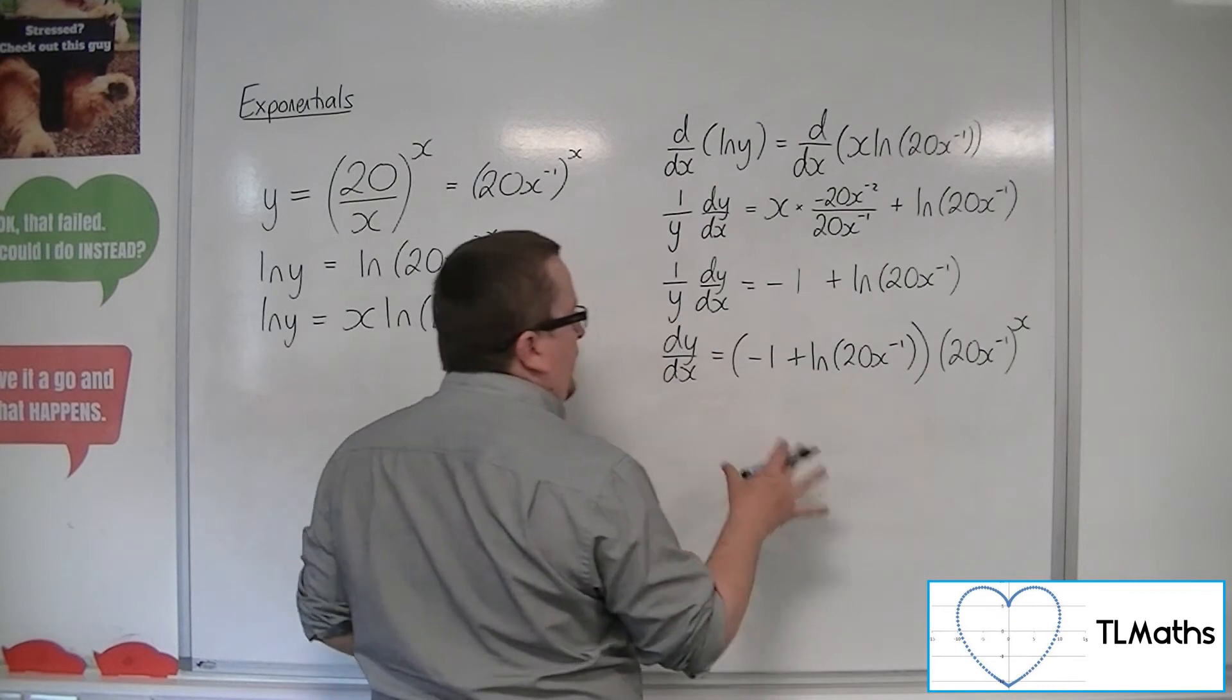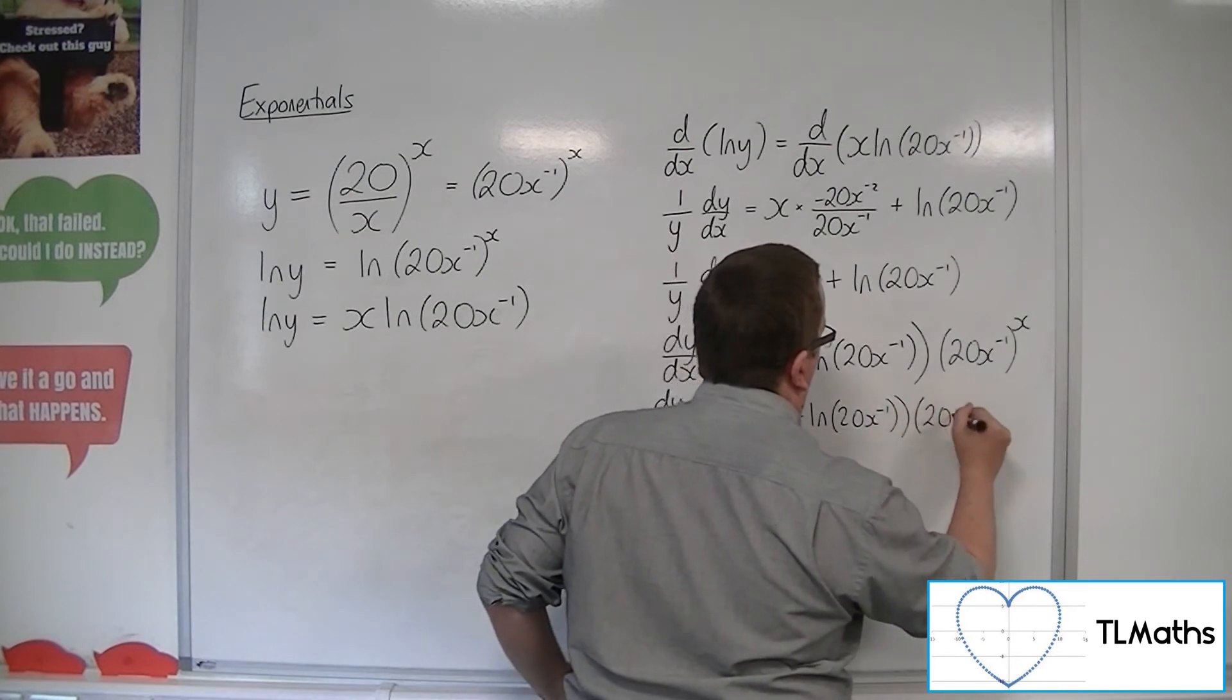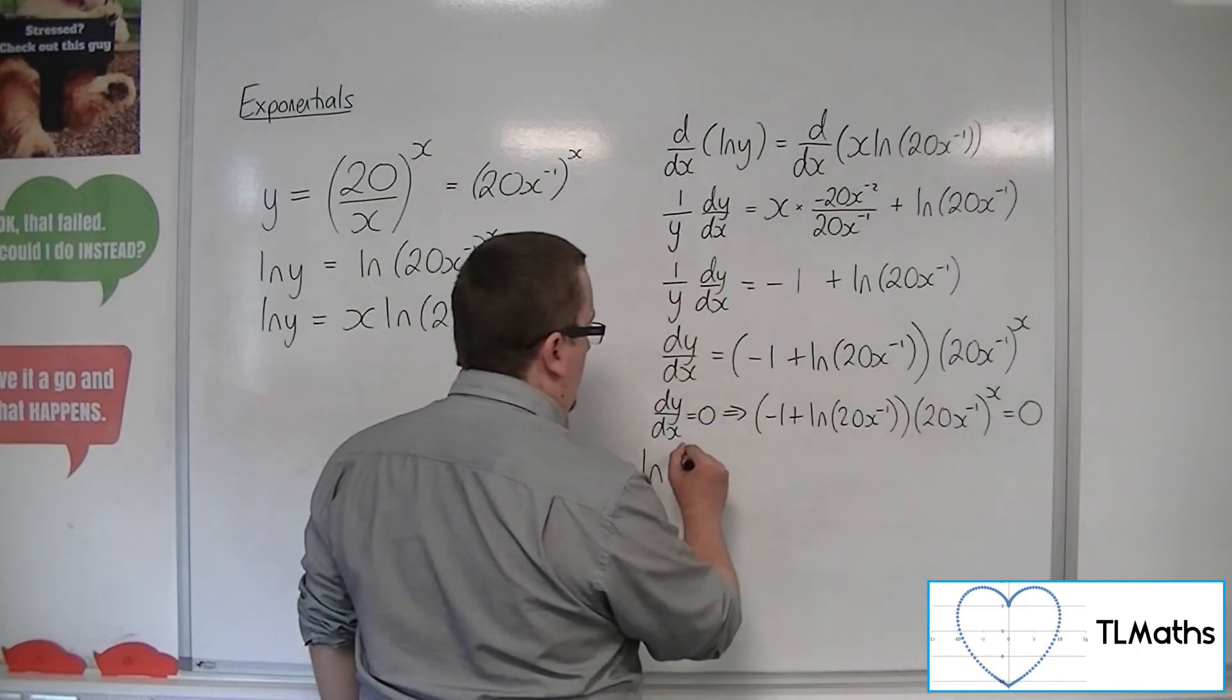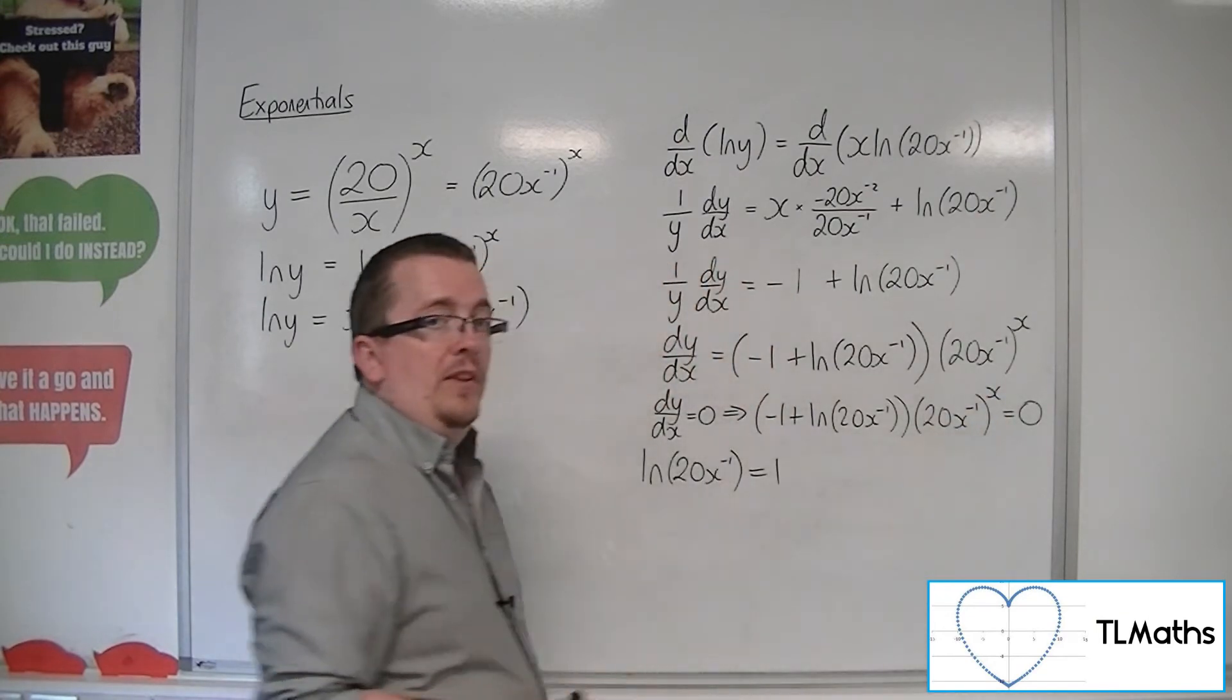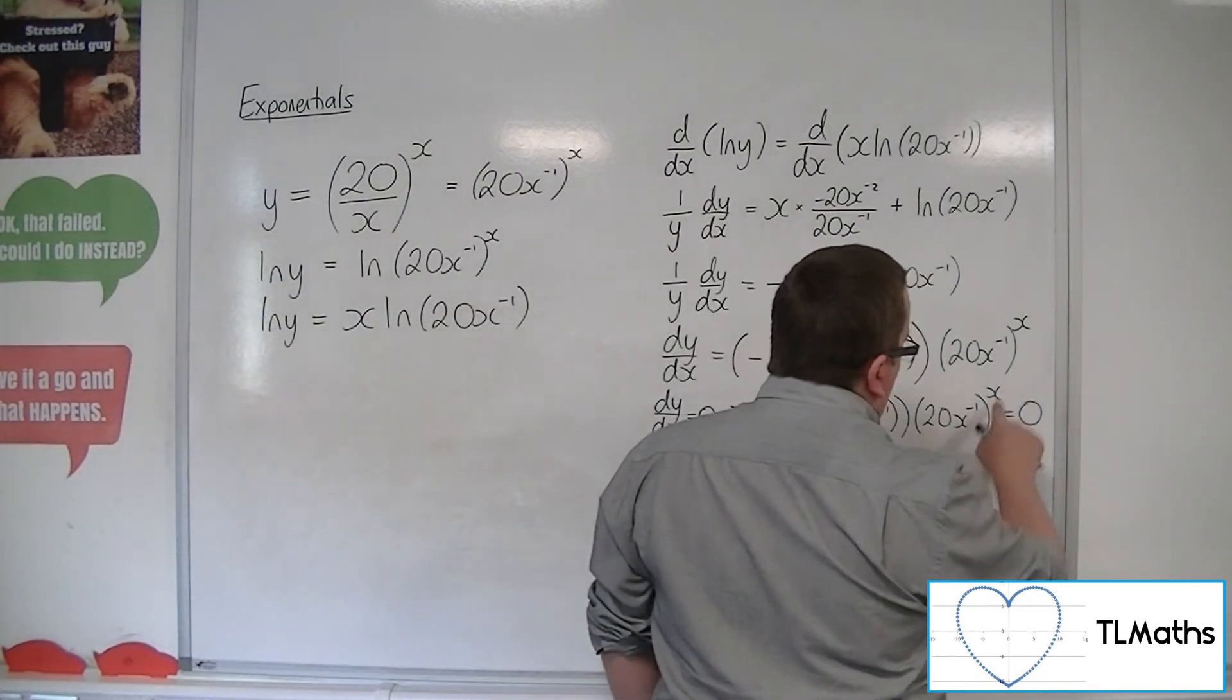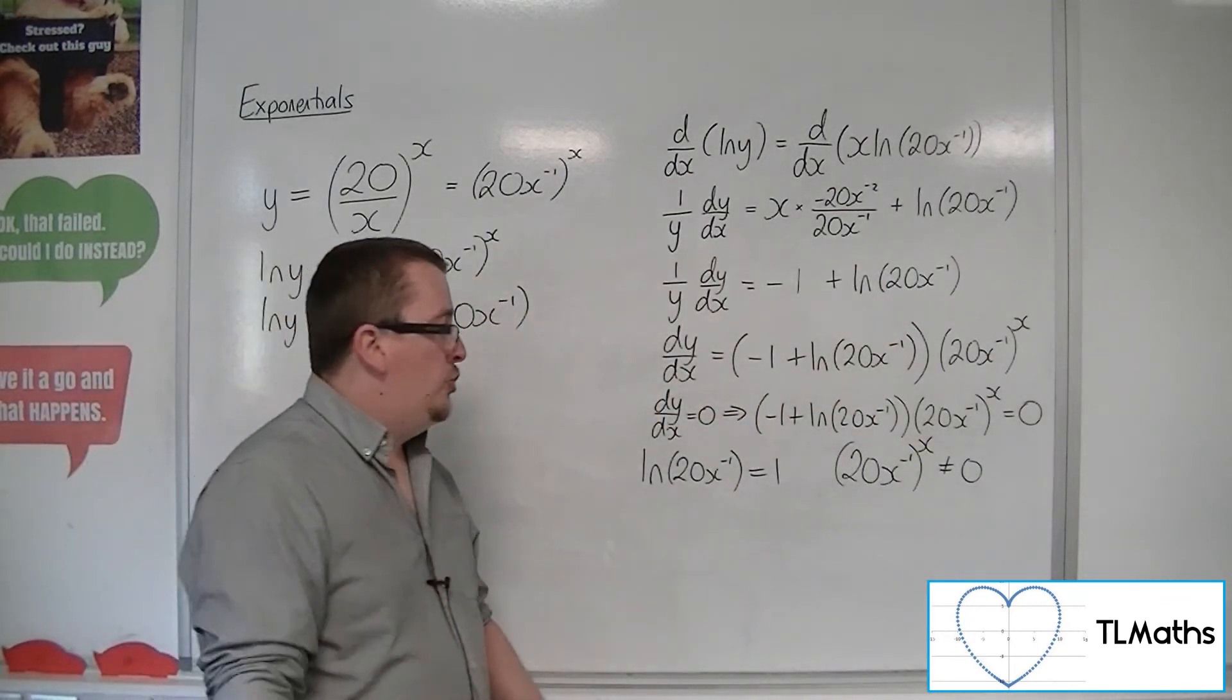Now we know that stationary points exist when dy by dx is 0. So we want to put this equal to 0. Now either this bracket is 0, in which case ln of 20x to the minus 1 must be equal to 1, or 20x to the minus 1 to the x must be 0. However, this cannot be 0. So 20x to the minus 1 to the x, there is no value of x that will make that 0. So we don't need to worry about that. So the only solutions can come from this.